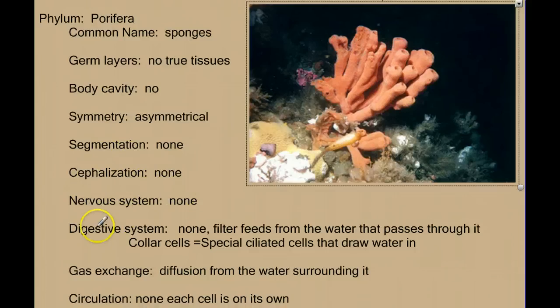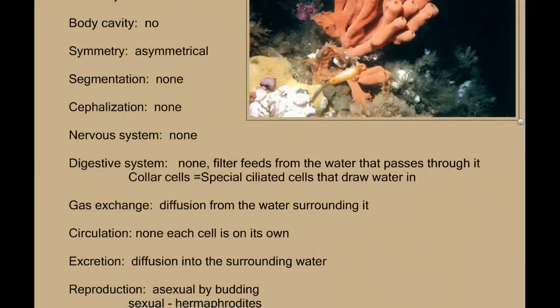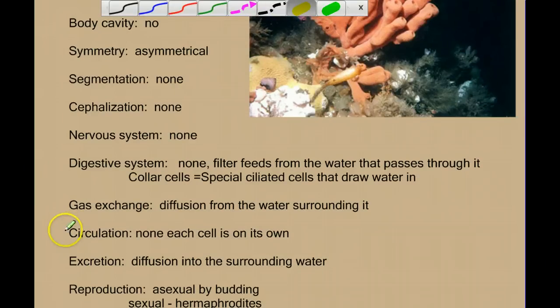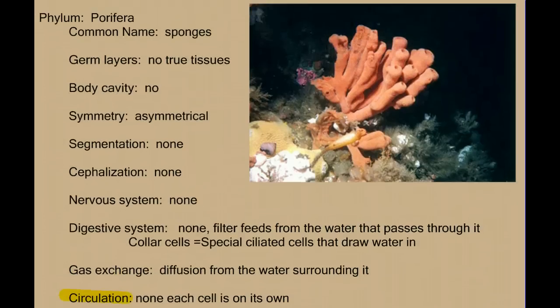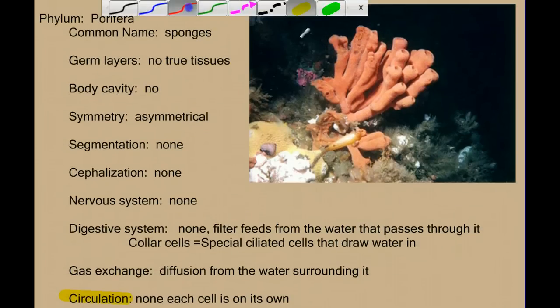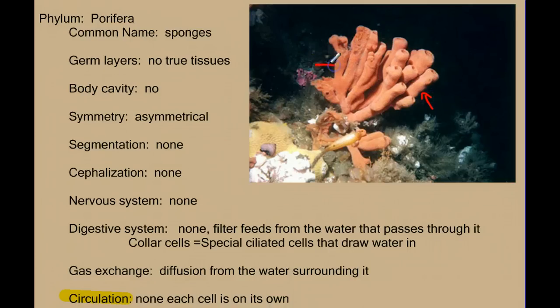And as we look at this very simple structure, we see that every cell basically has to fend for itself. In other words, there's no digestive system, there's no circulatory system. Which means that each cell is on its own. There's no way to move materials from cell to cell in an efficient manner besides diffusion. There's no nervous system in a sponge. So if you were poking the sponge over on this side, the cells way over here would have no way of knowing that the sponge is being messed with. There's no cephalization, there's no head. Where would you put a head? There's no front or back, there's no segmentation.